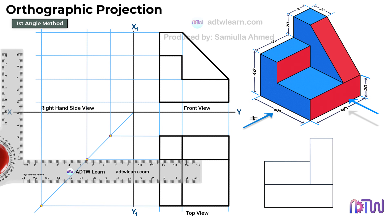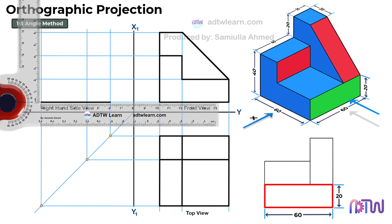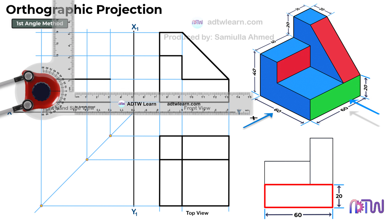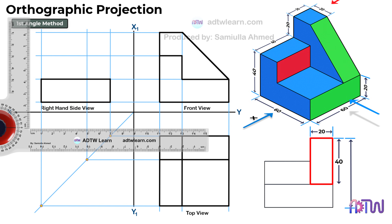Let's draw. When we view the object from the left-hand side, we will see a rectangle whose width is 60 millimeters and height is 20 millimeters. Therefore, draw this rectangle. Take a drafter and draw a horizontal line of 60 millimeters and a vertical line of 20 millimeters and construct a rectangle. Next, when we look from the right-hand side, we will see another rectangle of base 20 millimeters and height 40 millimeters, since the total height of the object is 60 millimeters. Let's draw this rectangle above the existing rectangle.